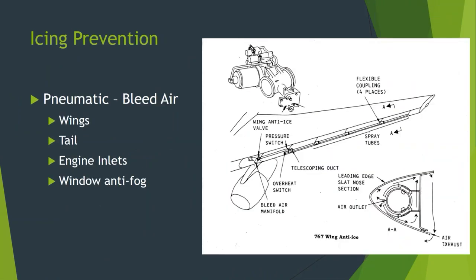Another form of ice prevention is pneumatic bleed air. We take hot bleed air from the engines or the APU — typically from the engines in flight — and duct it to areas like the wings, the tail, engine inlets, and the insides of windows. Wings, tail, and engine inlets receive it to prevent ice buildup. We can also run warm air over the insides of windows to prevent fog buildup. Windshields are almost always electrically heated, but bleed air keeps fog from building up.